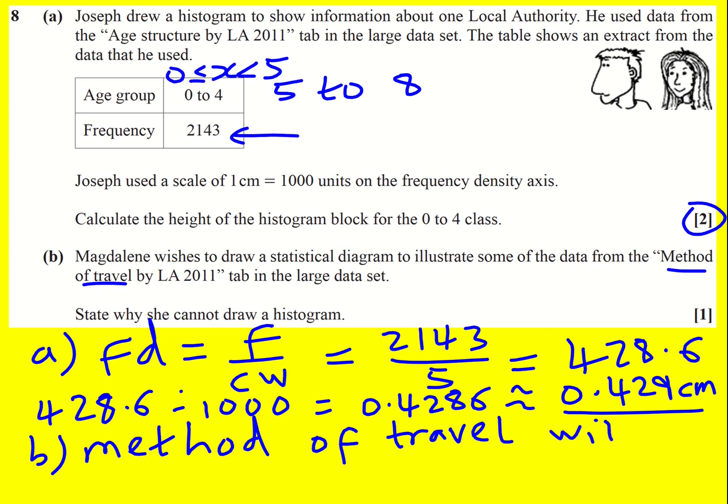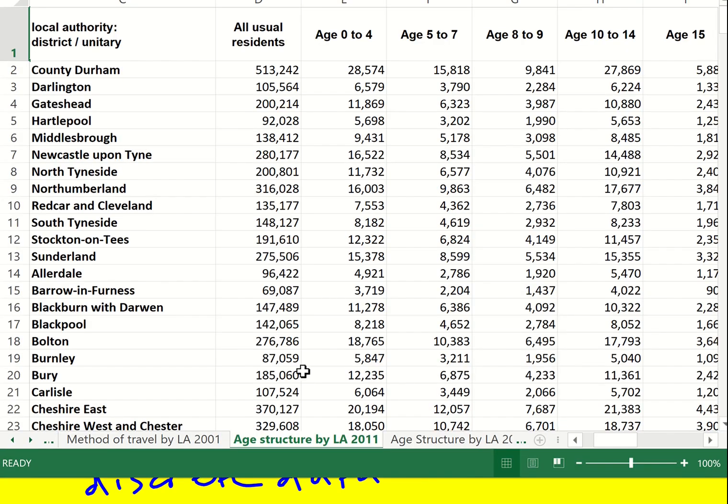If we just quickly look at the large data set, we see for age structure this is actually what's in the large data set: 0 to 4, 5 to 7 and so on. So even if you are familiar with it, you have to remember about this little subtlety that it's going to be 0 to 5 for this age group,